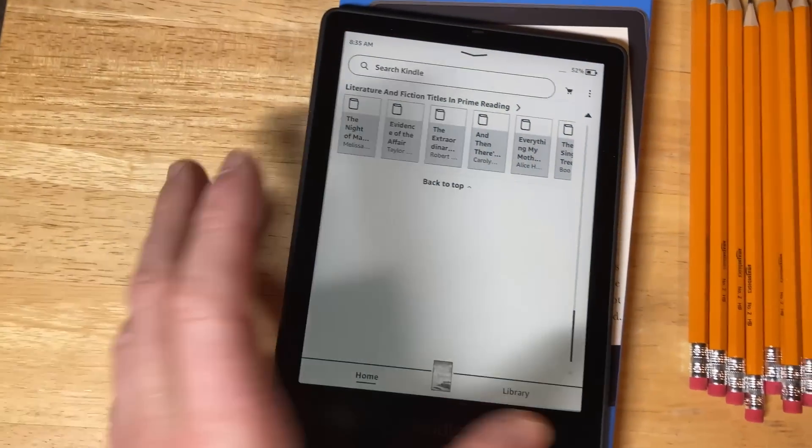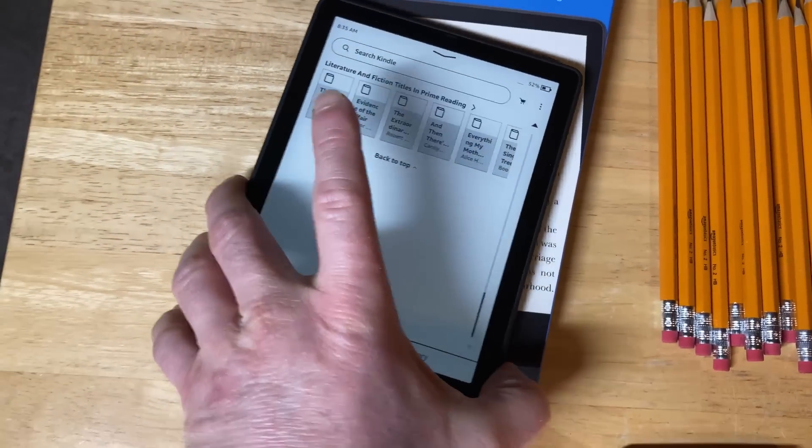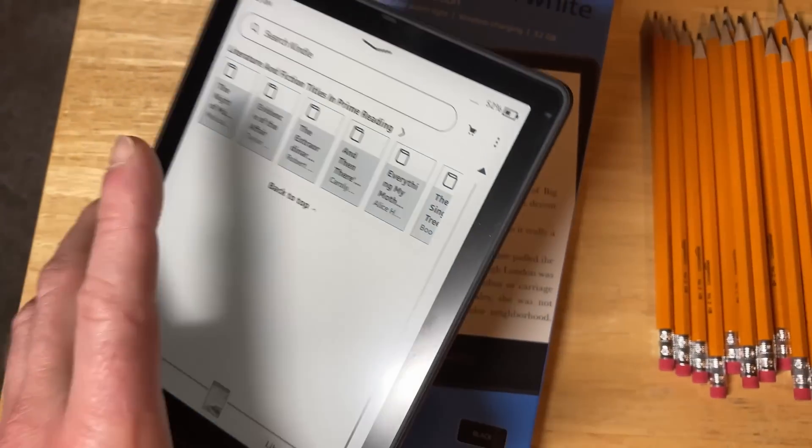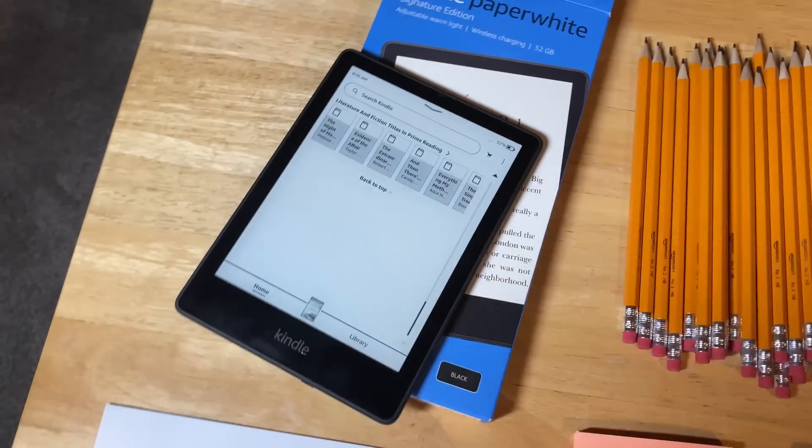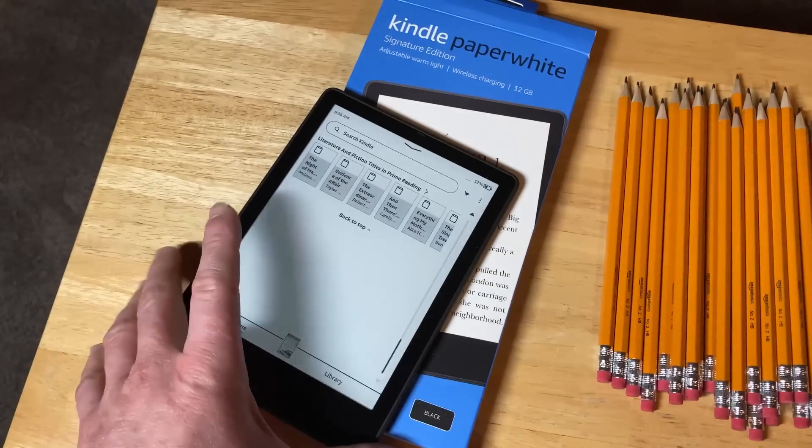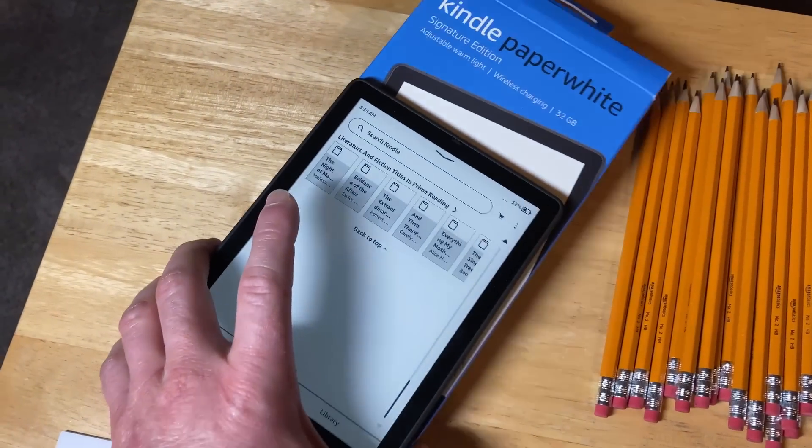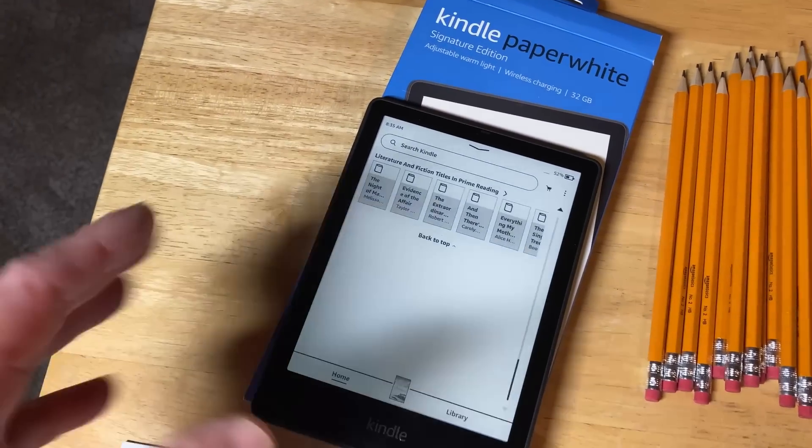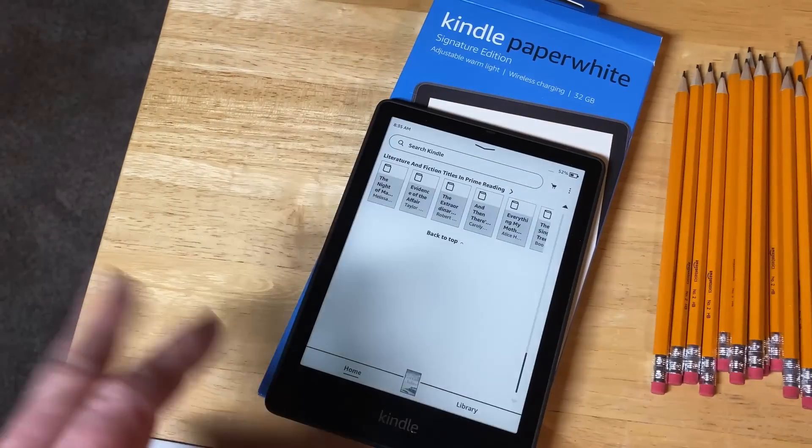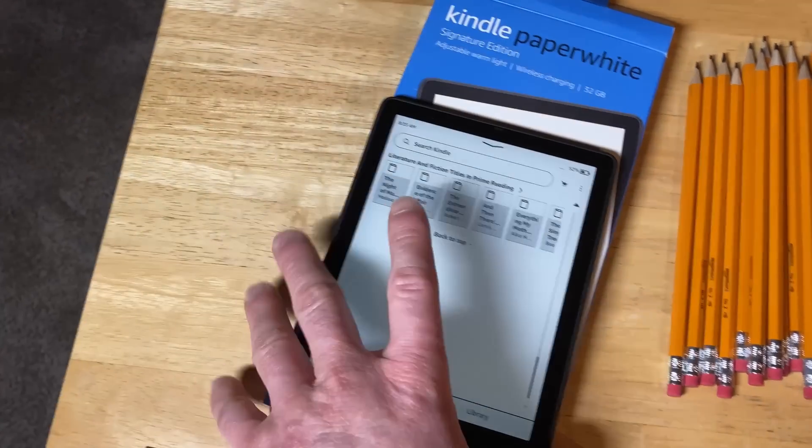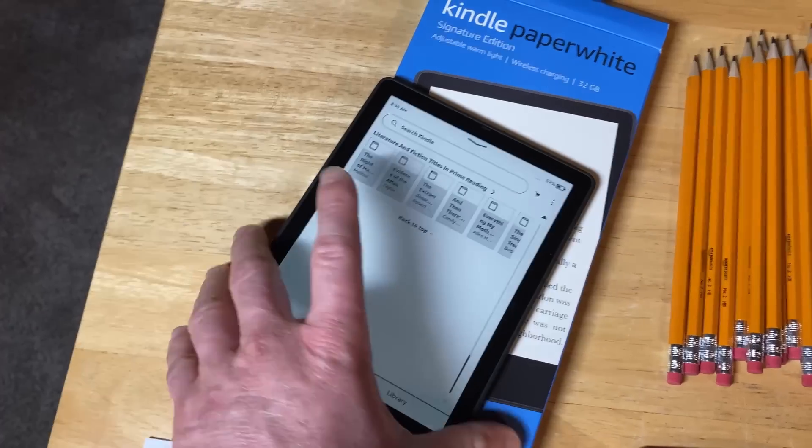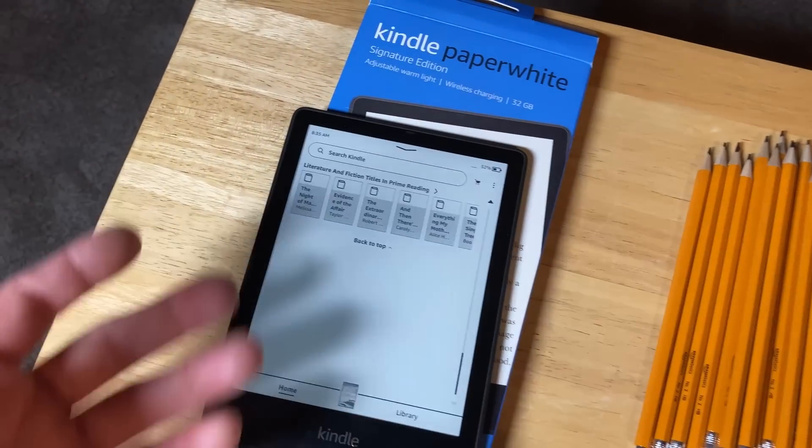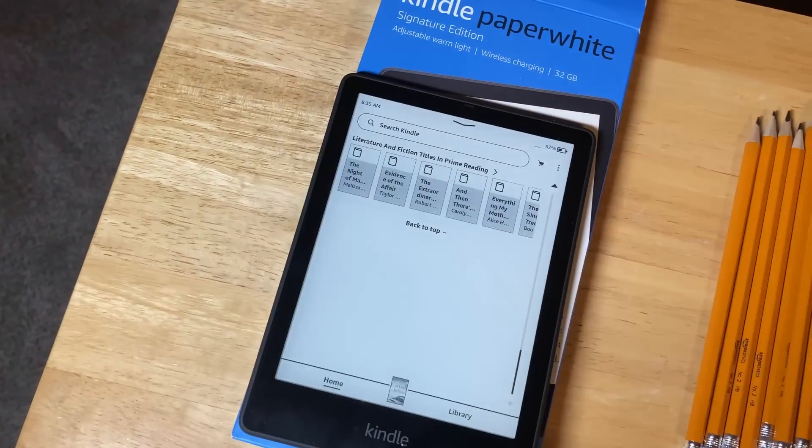The Kindle Paperwhite Signature Edition. This is probably the best ebook reader that you can get, and I'm really happy with it. Now, I normally don't talk a lot about ebooks. I do prefer physical books over ebooks, but I do have a Kindle that I use from time to time for reading. One of the things I like about this one is that it has anti-glare protection, and if it gets a little bit wet, it's not a big deal. Like, if it's drizzling or something, as long as you don't throw it in a lake, this should be pretty good. But very happy with this. It's a little bit on the pricey side compared to some of these other products, but if you're a reader, this is one of the things that is really going to change your life.